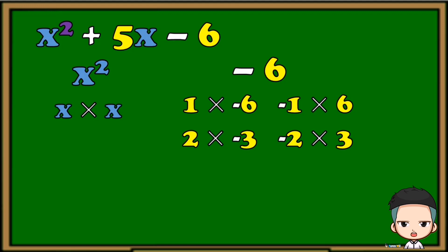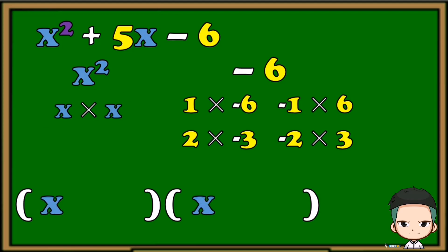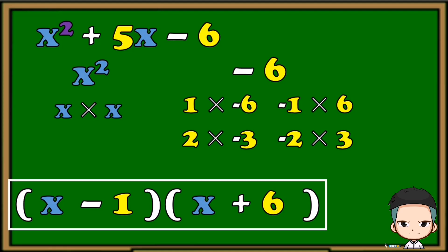Next, we need to look for the factors of negative 6 that if we add, the result is positive 5. If we add 1 and negative 6, the result is negative 5. If we add 2 and negative 3, that is negative 1. If we add negative 1 and 6, the result is positive 5. Since the sum of negative 1 and 6 is equivalent to the numerical coefficient of the second term, we're going to use the factors negative 1 and 6. Their sign will be the operation before them. So the factors of x squared plus 5x minus 6 is the quantity of x minus 1 multiplied to the quantity of x plus 6.